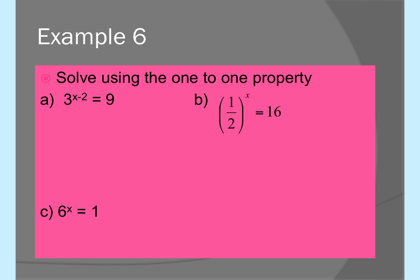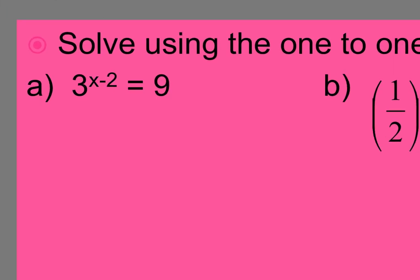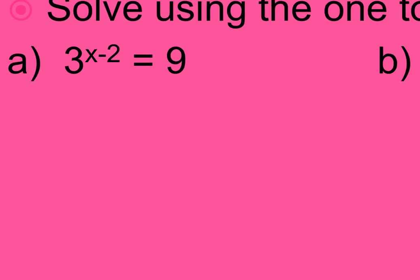Example 6a: solve using the one-to-one property. Take the bigger number and rewrite it as a power of the smaller number. For 3^(x−2) = 9, rewrite 9 as 3^2, giving 3^(x−2) = 3^2. Since the bases are the same, set exponents equal: x − 2 = 2, so x = 4. Check: 3^(4−2) = 3^2 = 9. ✓